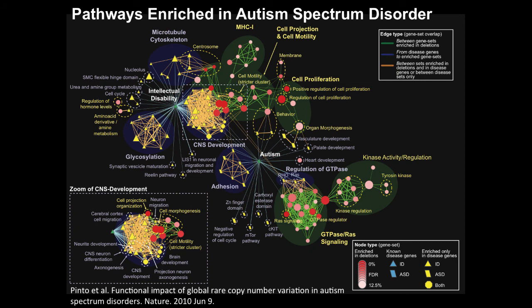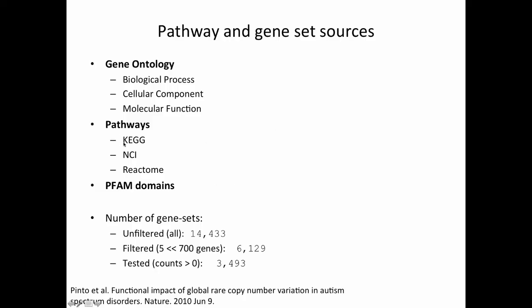Here's the enrichment map from the autism spectrum disorder analysis shown this morning. In this case, we used gene ontology, pathway databases including KEGG, NCI and Reactome, and also PFAM domains. There were 14,000 gene sets represented, but after filtering we only got about 3,500 that were relevant to the data.